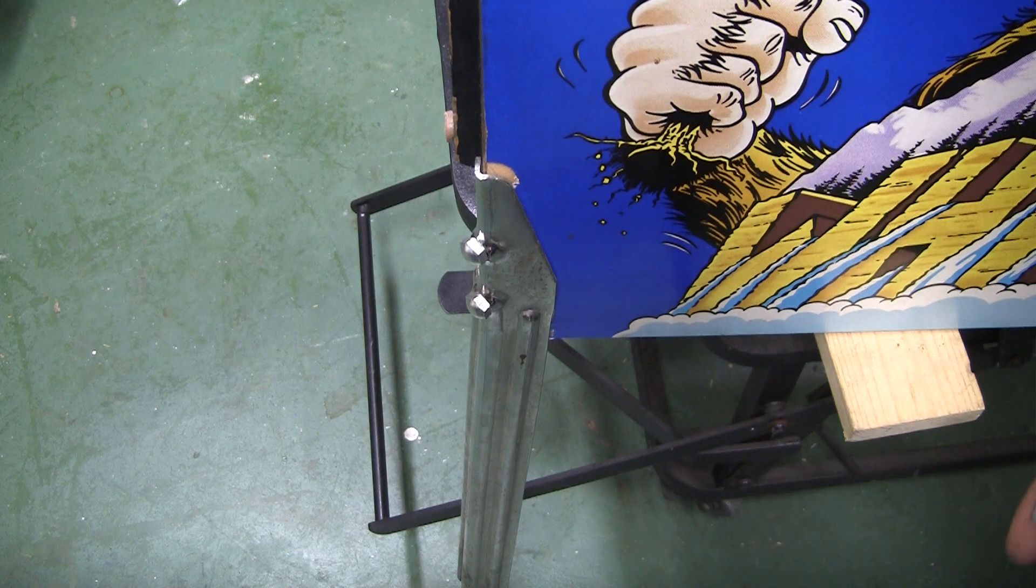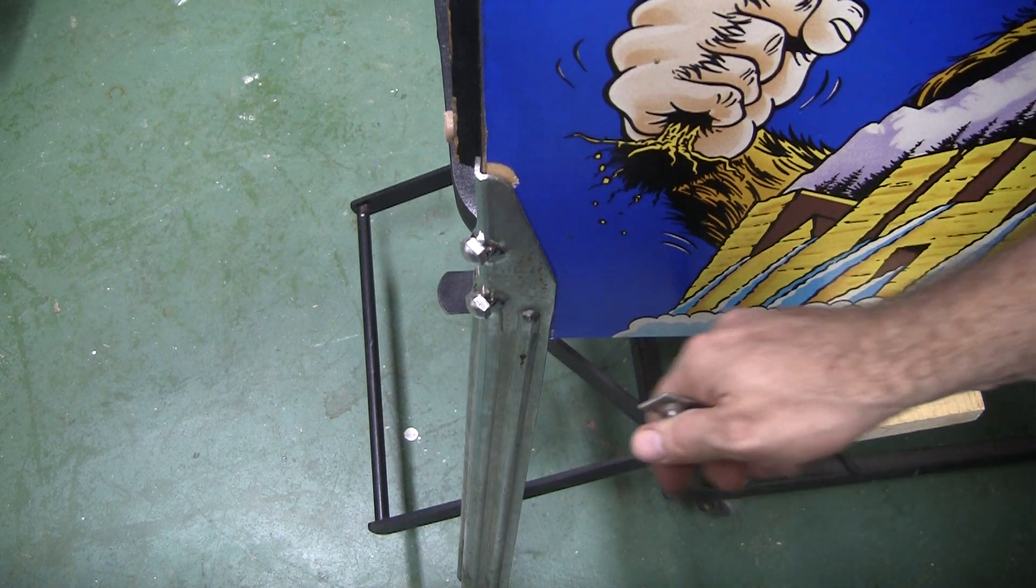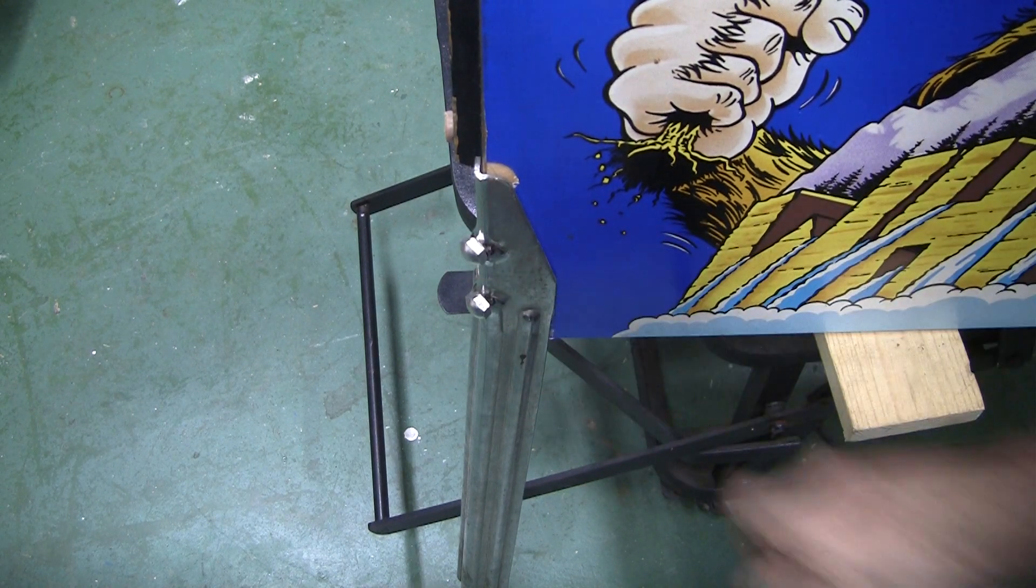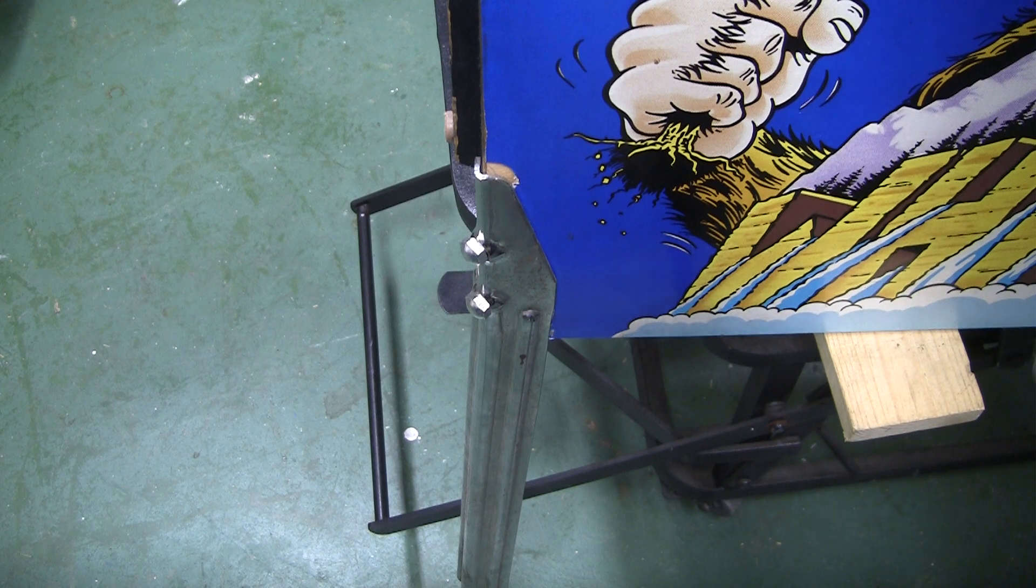One of the biggest problems with pinball machines and these legs is that people will sometimes tighten these things down too tight and strip them. And it's very easy to do that and it creates a big problem.